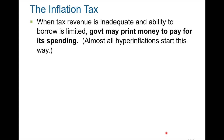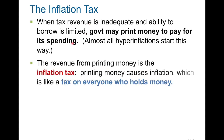So when tax revenues are not adequate — if the government cannot raise taxes or issue bonds — then the government may print money to pay its spending. The revenue from printing money is actually called the inflation tax, and it is a tax on everyone that holds money.